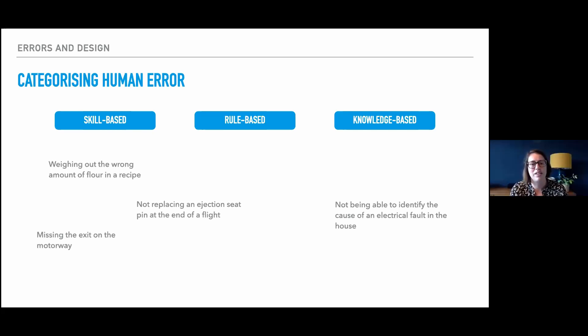Getting into some more pointy end type errors that we might be looking at in an aviation context. Flight with an ejection seat, need to replace the seat pin at the end of the flight. In theory, that's a simple rule-based error. If you've reached the end of the flight, replace the seat pin. And so it would typically fall into that category. However, as pilots become very experienced, they've undertaken many, many flights in these types of aircraft, it becomes second nature. It starts moving into that skill-based category of something that's done almost without thought to collect the pin and return it into the seat.